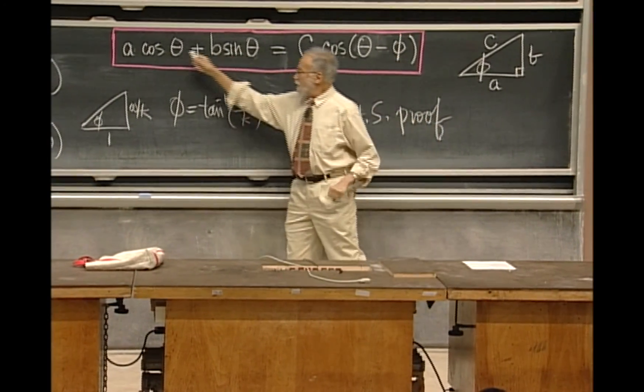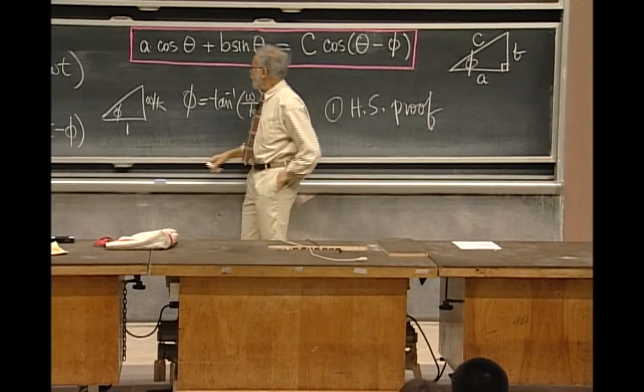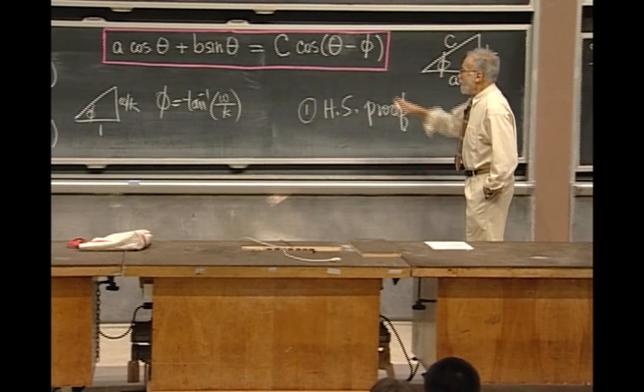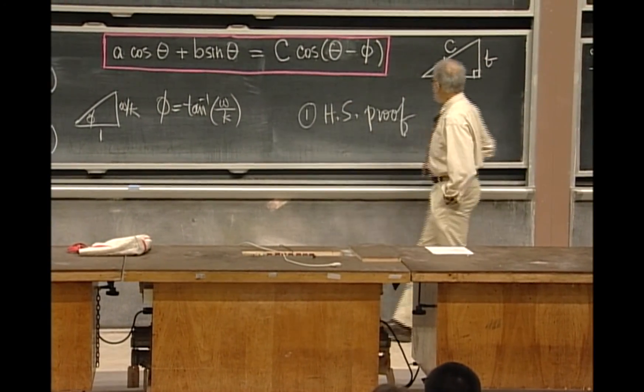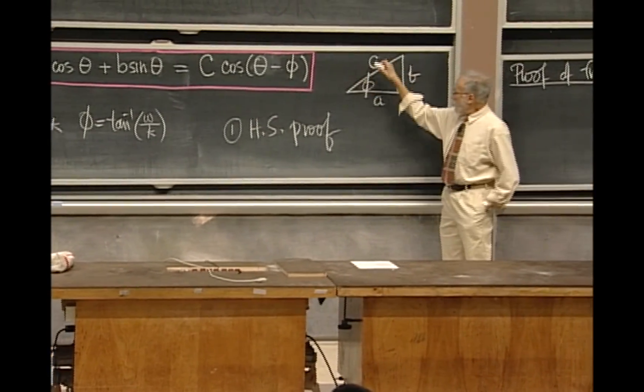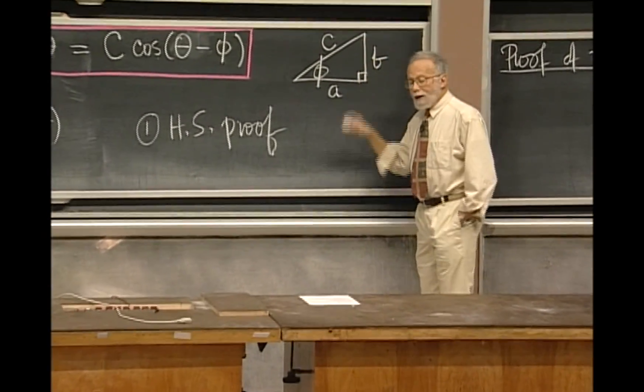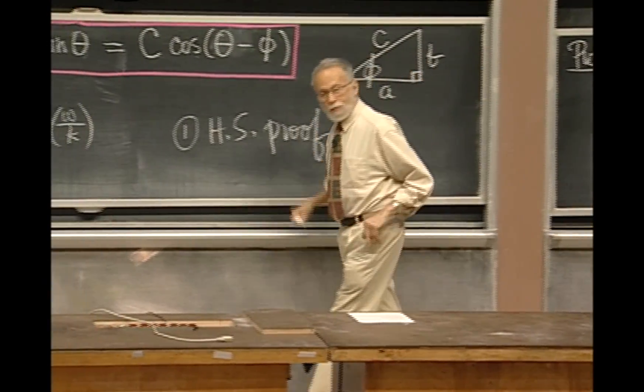And then converts it into this. It shows you that, once you've done that, that A turns out to be C cosine φ, and B, the number B is C sine φ. And therefore, it identifies the two sides.